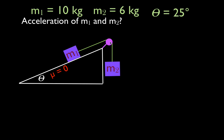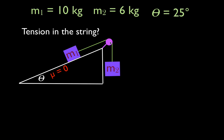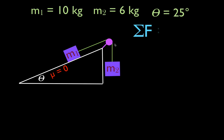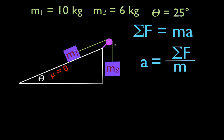That means when we calculate the acceleration of M1 and M2 and the tension in the string, we can ignore the mass of the string and any energy lost in turning the pulley. To get the acceleration and the tension, we use Newton's second law: the sum of the forces equals mass times acceleration. Because the objects are attached by the inelastic string, they will have the same acceleration — the acceleration of M1 equals the acceleration of M2 — and we can apply Newton's second law to them as a system.